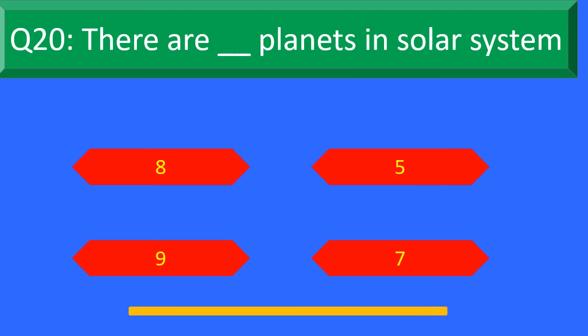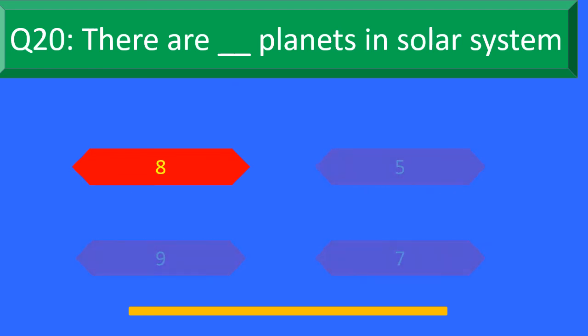And your time is up. The right answer is Option A: 8. There are 8 planets in the solar system.